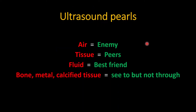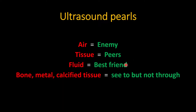Air is the enemy of ultrasound — whatever you see in an air-filled area is just an artifact. Tissue in the body is a friend of ultrasound; you can see tissue structure very well. Fluid is the best friend, appearing clearly in black color. Bone, metal, and calcified tissue are visible but you are not able to see through them because the waveforms cannot pass through.